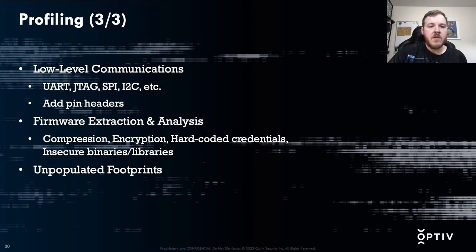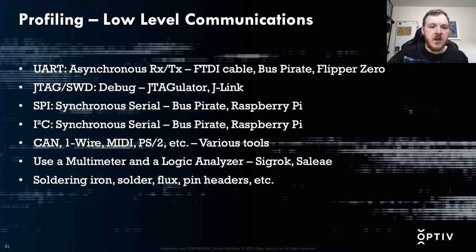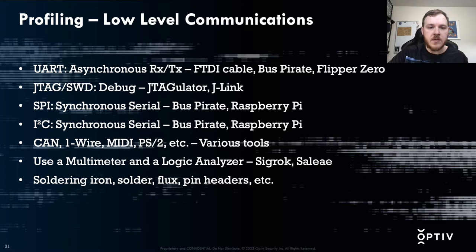We'll also want to look at low-level communications, extract firmware if we weren't able to find it on the manufacturer's website, and look for unpopulated footprints on the circuit. There are a lot of different protocols a device can use. UART and JTAG are for debug purposes and testing, while SPI, CAN, and I2C are chip-to-chip communication protocols. For UART — an asynchronous serial protocol where you need to know or guess the clock speed ahead of time — I'm usually using an FTDI cable or adapter, or a Bus Pirate, and lately I've been using my Flipper Zero as a transparent UART bridge.